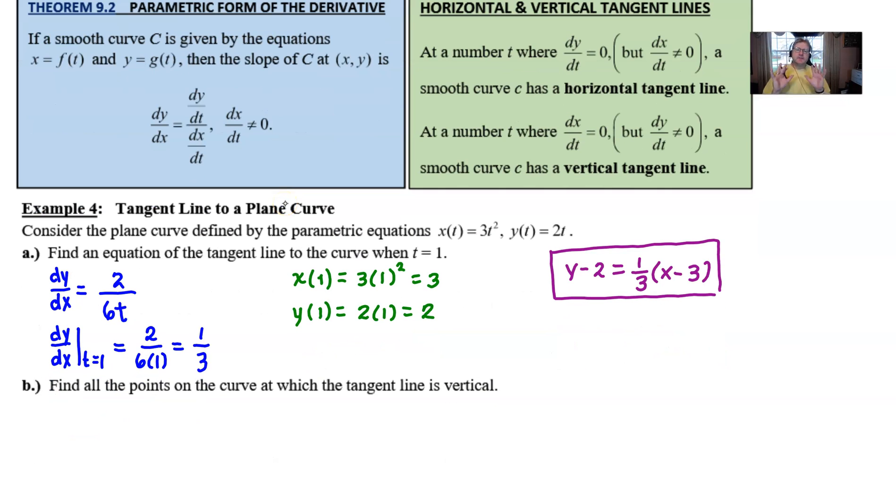So for instance, for part b, find all the points on the curve at which the tangent line is vertical. What we would need to do here is take the denominator. Vertical means denominator, right? Vertical is talking about dy/dt, in this case, equals 0.